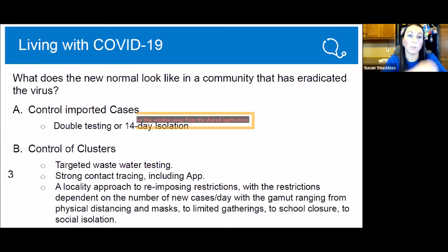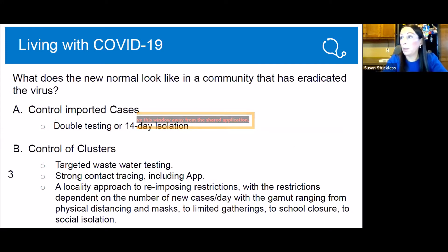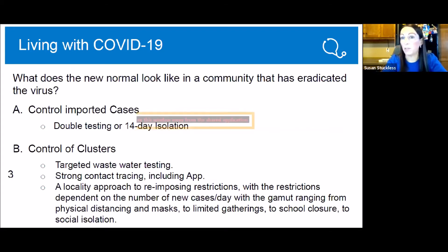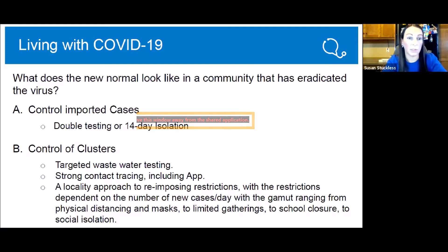So what does this mean for living with COVID-19? What does the new normal look like in a community that has eradicated the virus? You need to be able to control imported cases — double testing or 14-day isolation — and control any new cluster with strong contact tracing, possibly including an app. In most cases they take a locality approach where restrictions depend on the number of cases, ranging from physical distancing and masks to limited gathering sizes, school closures, and so on, directed at a specific city or area rather than the whole province. Another approach is targeted wastewater testing — if virus is found, a specific testing blitz is done in that area to ensure no community cluster breaks out.